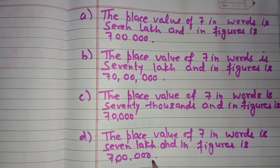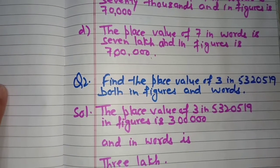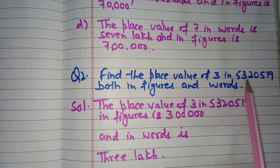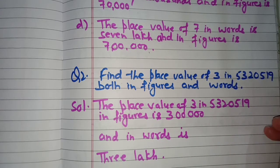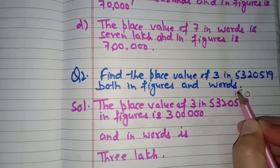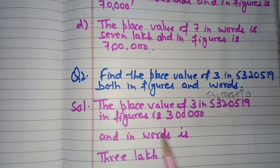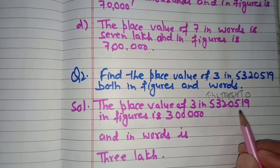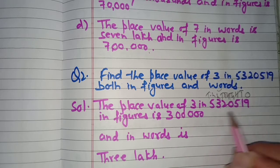This is how you write numbers in the place value chart and find the place value of the required digit. Question number two: find the place value of 3 in the number 5,320,519, both in figures and words. We mention the places: Ones, Tens, Hundreds, Thousands, Ten Thousands, Lakhs, Ten Lakhs. The digit 3 is at the Lakhs place, so in figures its place value is 300000.